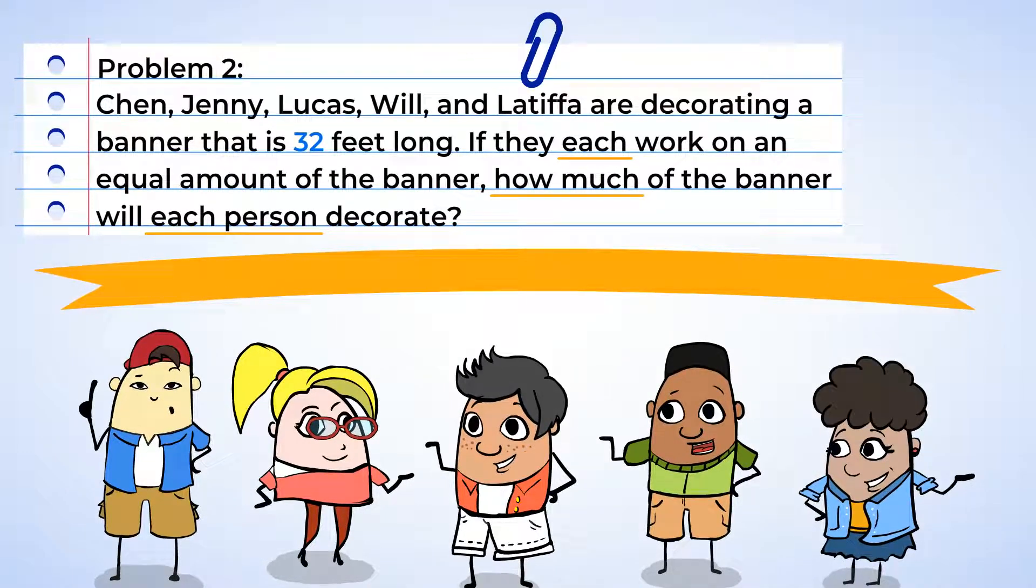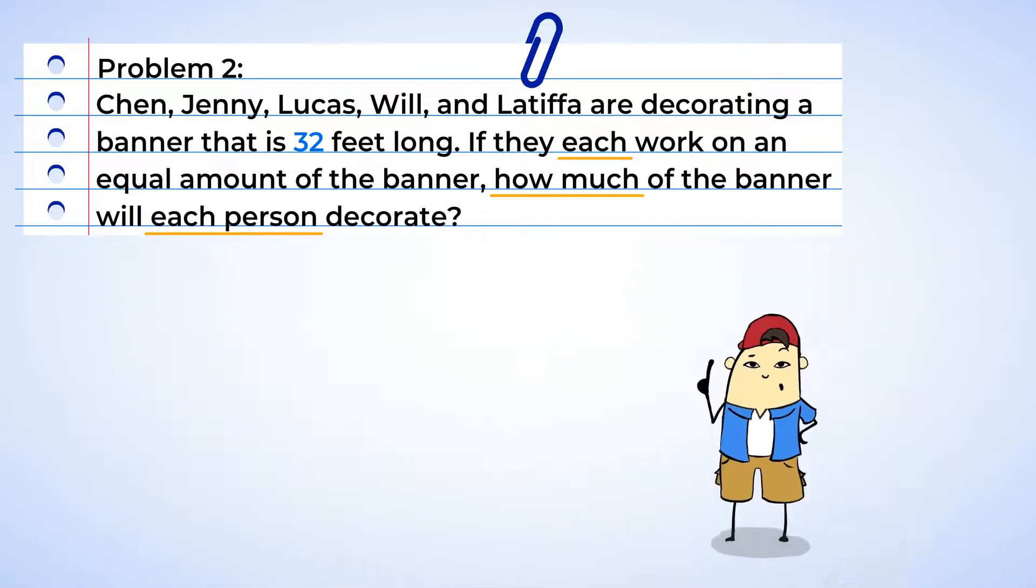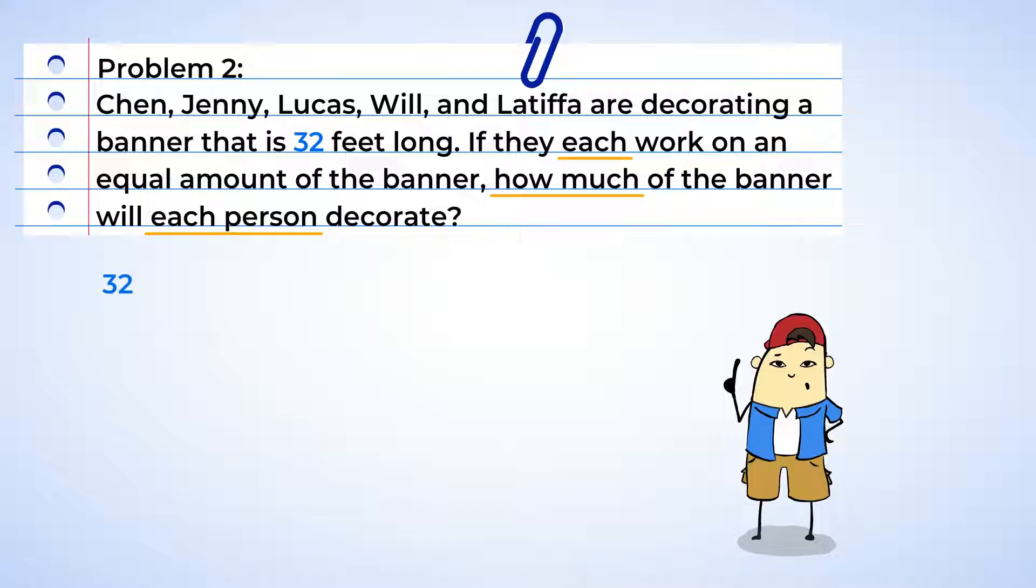All right, let's start by creating the division statement. There are five people that are splitting up 32 feet, and this means that we'll be taking 32 and dividing it by five. Now that we have the division statement written, we can change it to a fraction. All right, 32 over five.